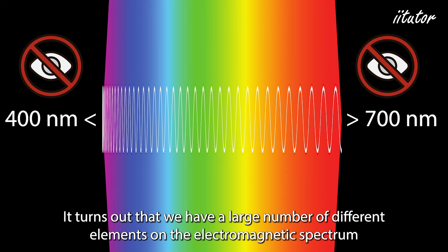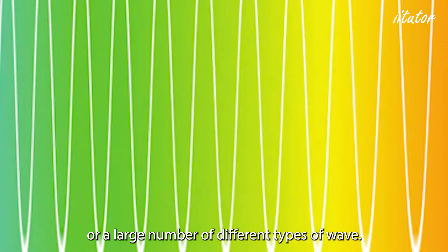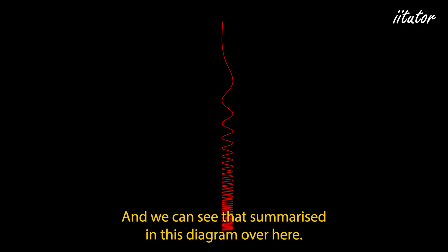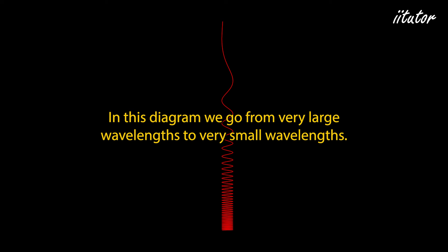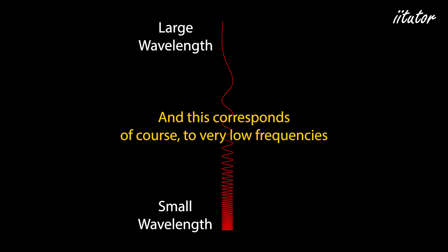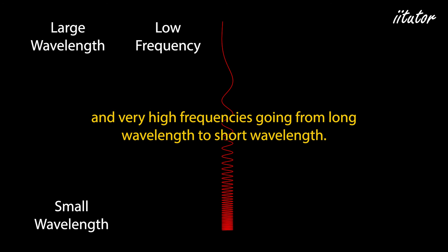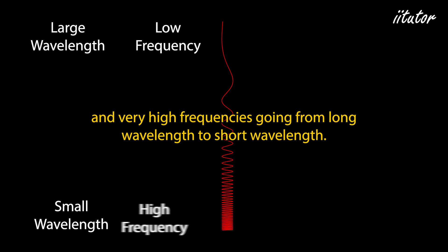There are many different types of waves on the electromagnetic spectrum, as summarized in this diagram. In this diagram we go from very large wavelengths to very small wavelengths, which corresponds to very low frequencies and very high frequencies.